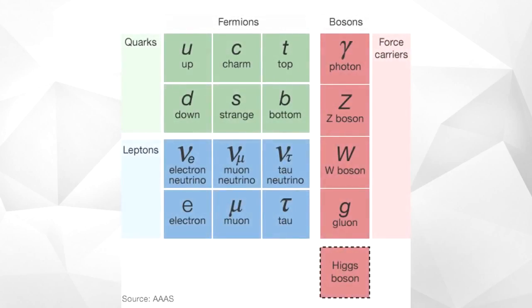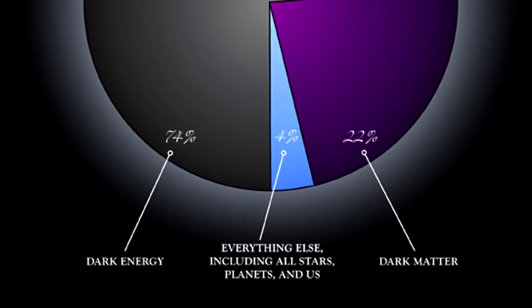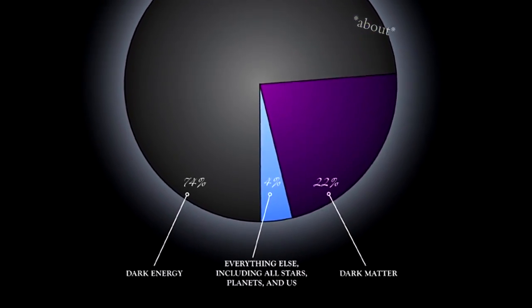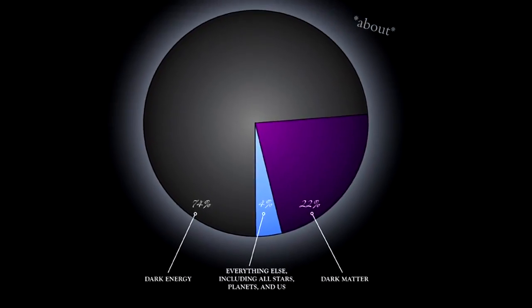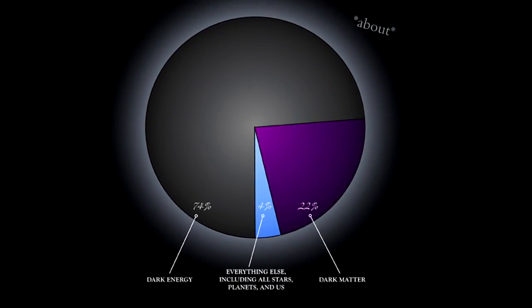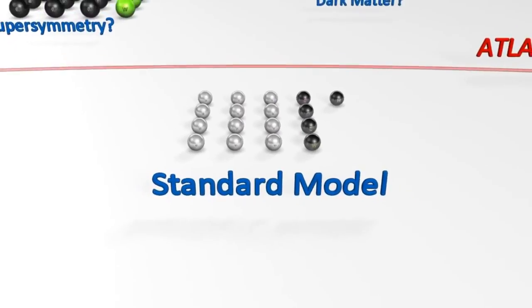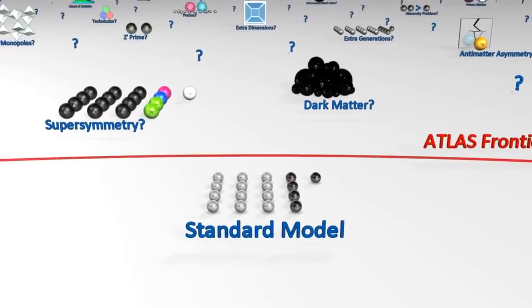This model of particles is called the Standard Model, and it's an incredible theory that highlights an important side of physics. But that's not all of it — we still have lots of discoveries yet to make. Matter is only what makes up 5% of our universe; 25% is dark matter and 70% is dark energy, of which we don't have full understanding.